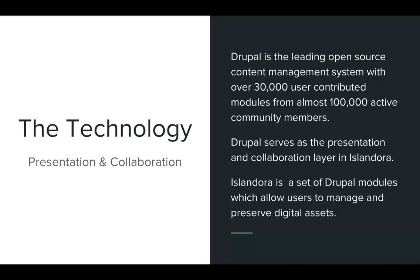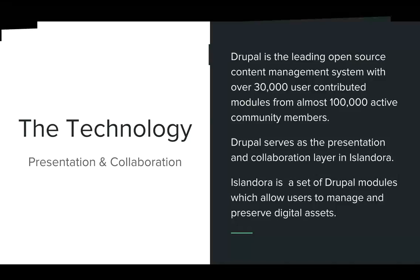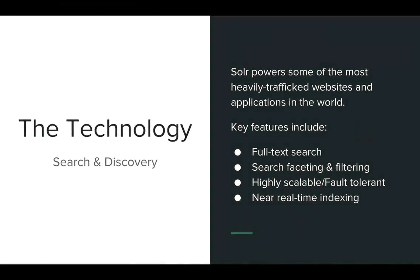Islandora is essentially a suite of Drupal modules that allow us to build repositories on top of Fedora Commons. These modules make it possible to build, populate, and configure a digital repository without the aid of a developer. Apache Solr is used for discovery within Islandora. Solr is very powerful, flexible, and configurable, and it's used on some of the most heavily trafficked websites worldwide. Key features include full text search capability, search faceting and filtering, high scalability, and near real-time indexing — for example, an ingested object will become searchable within about 30 seconds.